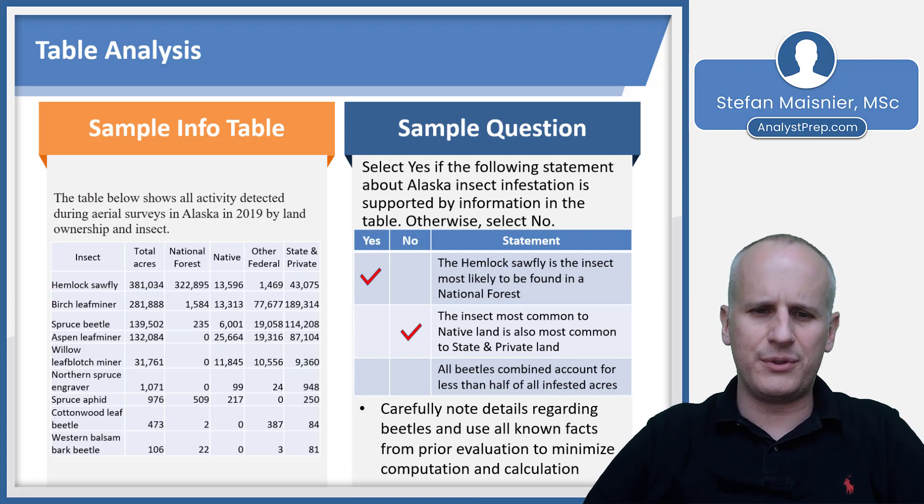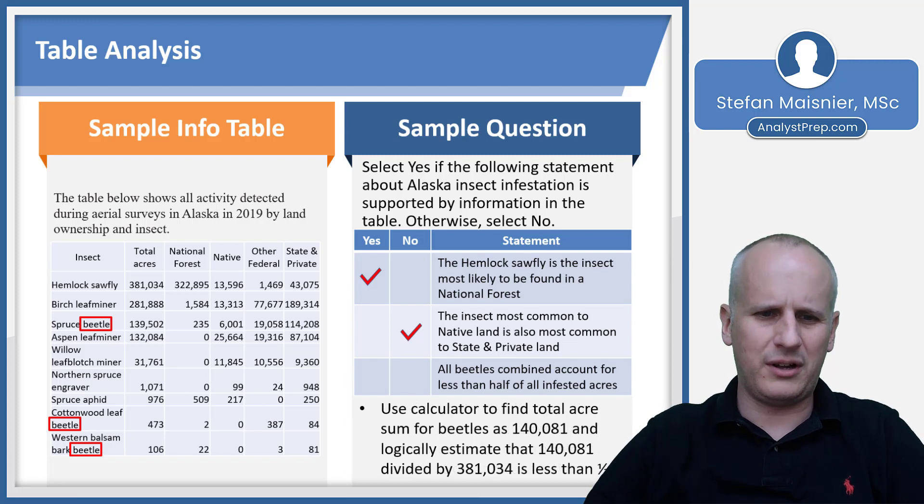And then we have one more statement about beetles combining to account for less than half of all infested acres. So we have to carefully note the details about beetles and use all of our known facts to minimize computation and calculation. We've got three different types of beetle, and we can see that we're basically going to add up to around 140,000 of our acres. And that 140,000 is going to be out of the total of 381,000.